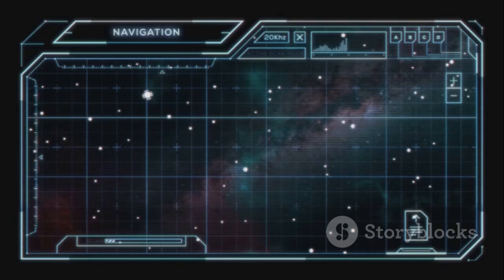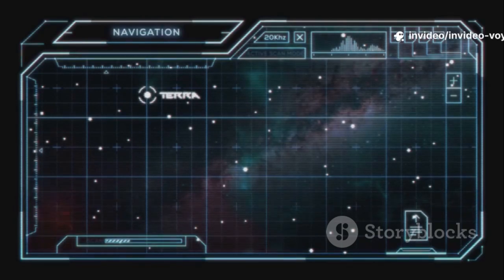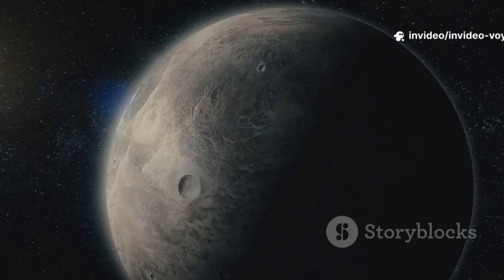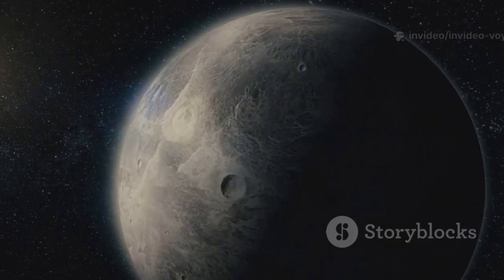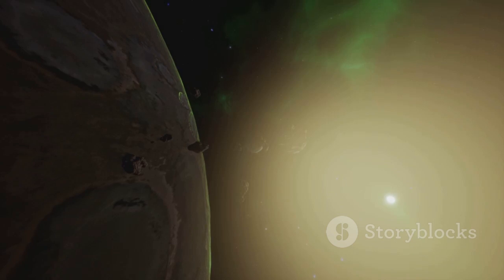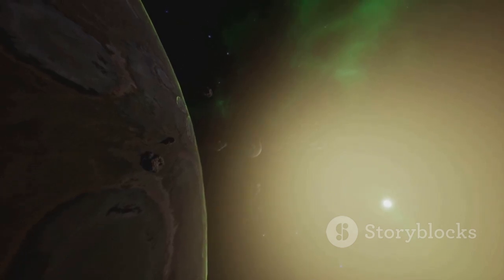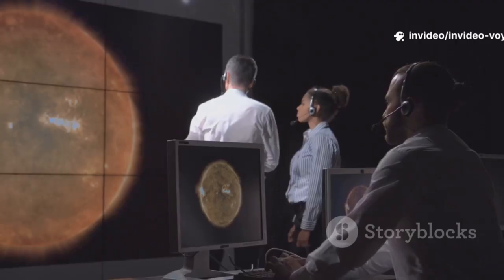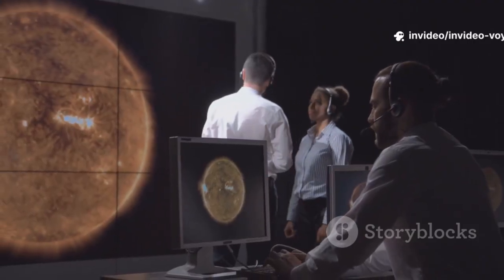They simulated different speeds, different rotation rates, different magnetic field strengths. The models suggested the object was dense, very dense, denser than a typical rocky or icy planet. This pointed towards an object with a large metallic core, or perhaps something made of exotic materials we don't fully understand. The mystery only deepened with each new simulation.